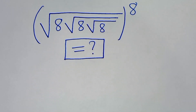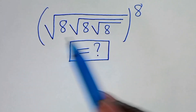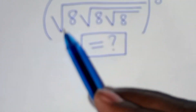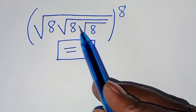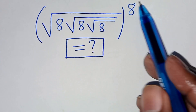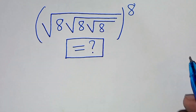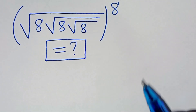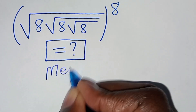Hello everyone, you are welcome to solve this nice radical square root problem, which is the square root of 8 times square root of 8 times square root of 8, raised to power 8. How do we solve this problem? We are going to solve by applying two methods. Let's start with method 1.